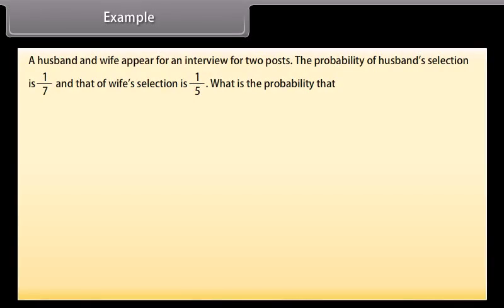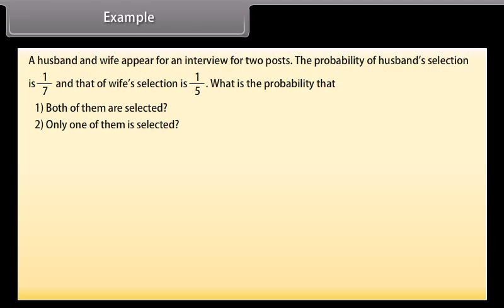Example: A husband and wife appear for an interview for two posts. The probability of the husband's selection is 1/7 and that of the wife's selection is 1/5. What is the probability that: 1. Both of them are selected, 2. Only one of them is selected, 3. At least one of them is selected?